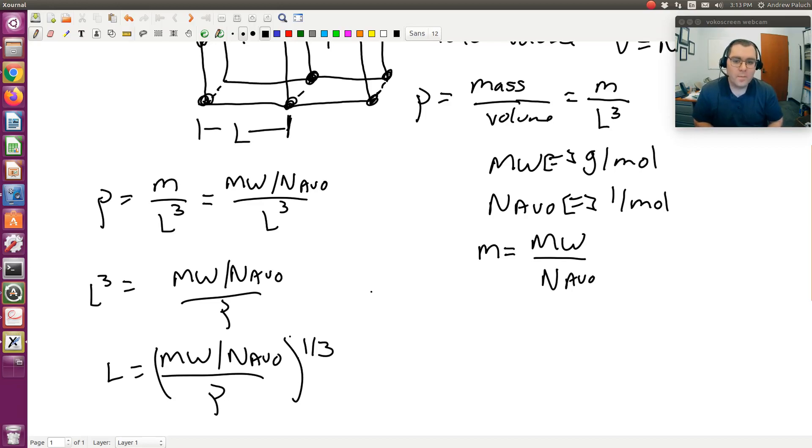And if I have the molecular weight of water, 18 grams per mole, I have N Avogadro, and then I have density in terms of grams per centimeter cubed, I'm going to get L in terms of centimeters, and then it'll just be a matter of converting centimeters to Angstroms.